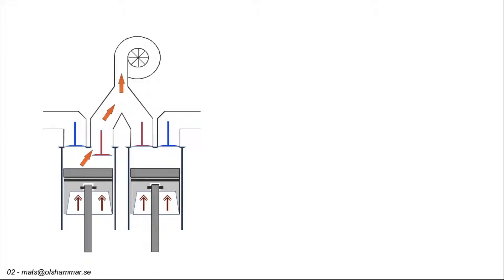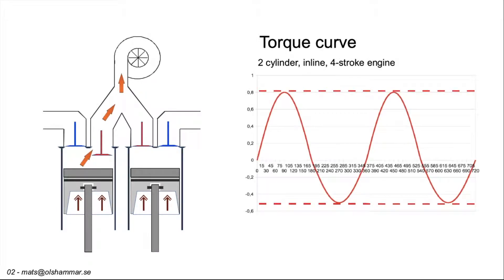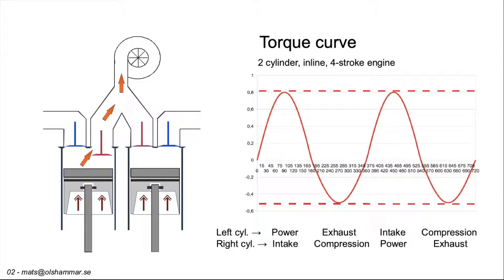This is a normal two-cylinder four-stroke engine. It has problems with vibrations as the two pistons move in tandem up and down. The torque is also uneven as only two out of four strokes give positive torque — the other two strokes give negative torque. Power and intake: first stroke positive torque. Exhaust and compression: negative torque. Intake and power: positive torque. Compression and exhaust: negative torque.